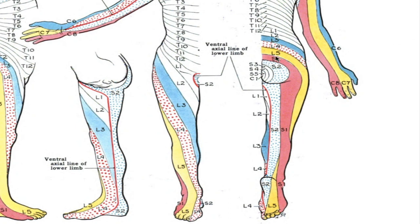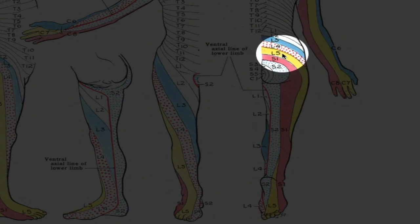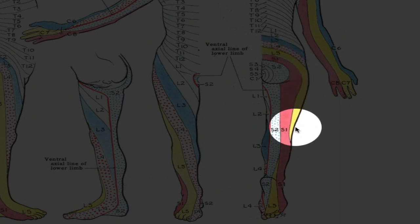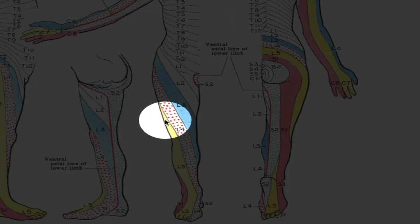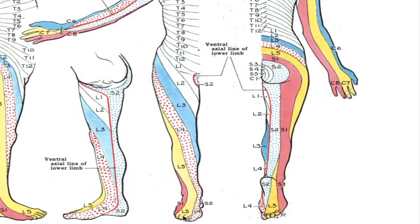Now let's look at the next one down. The L5 area, shown in yellow. Once again, it comes from the center of the spine, wraps around, goes over the buttocks, over the hip, the outside of the thigh, and then comes around to the top of the shin and into the top of the foot.